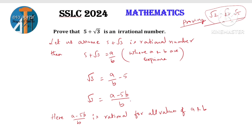The answer will be in the form of a by b — it will be rational. LHS equals RHS, meaning they are equal. So if RHS is rational, definitely LHS will be rational. Then root 3 is rational.